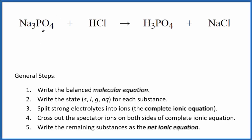Let's write the balanced net ionic equation for Na3PO4 plus HCl. This is sodium phosphate and this is hydrochloric acid. The first thing we need to do with net ionic equations is balance the molecular equation. So this up here is the molecular equation.